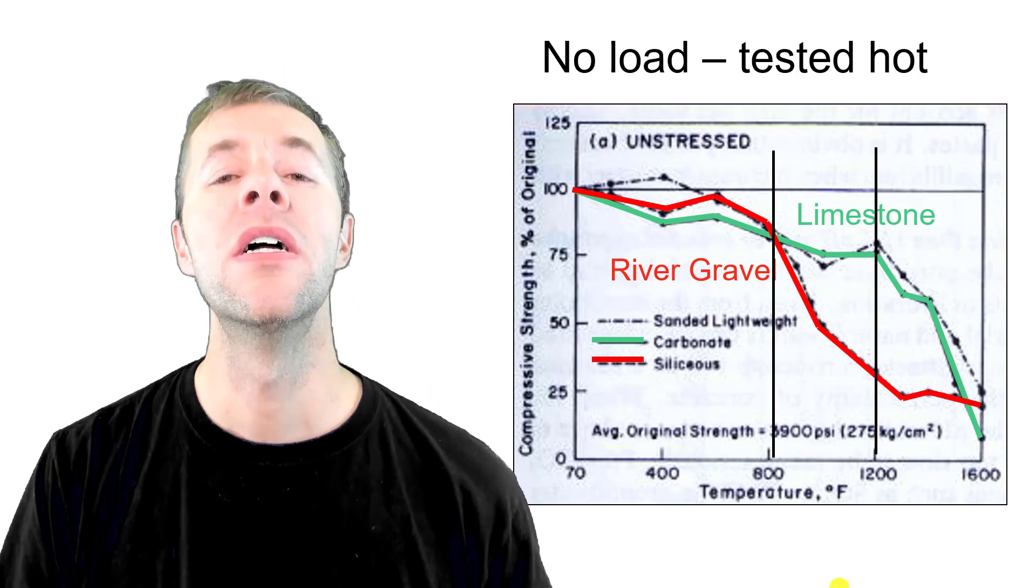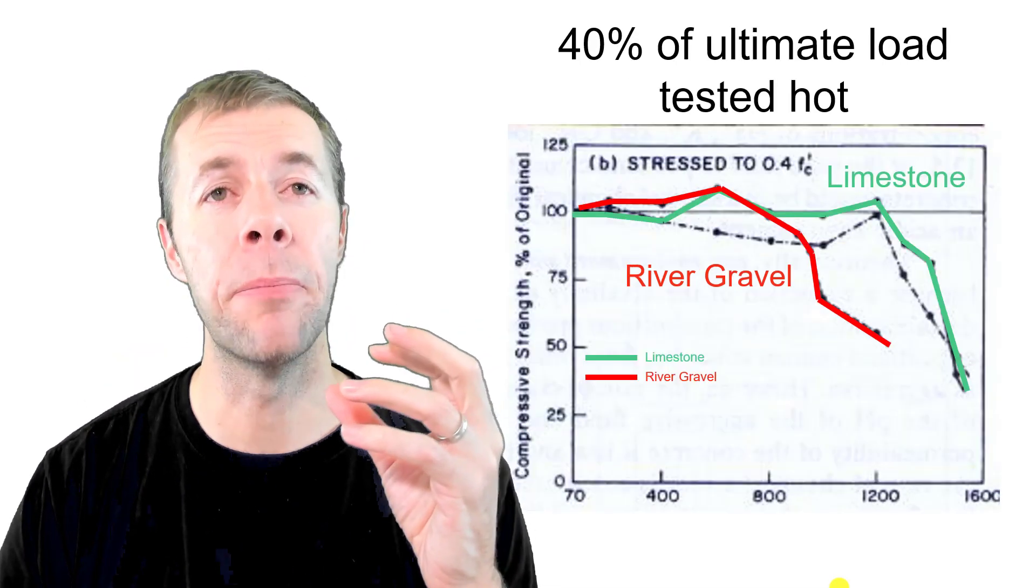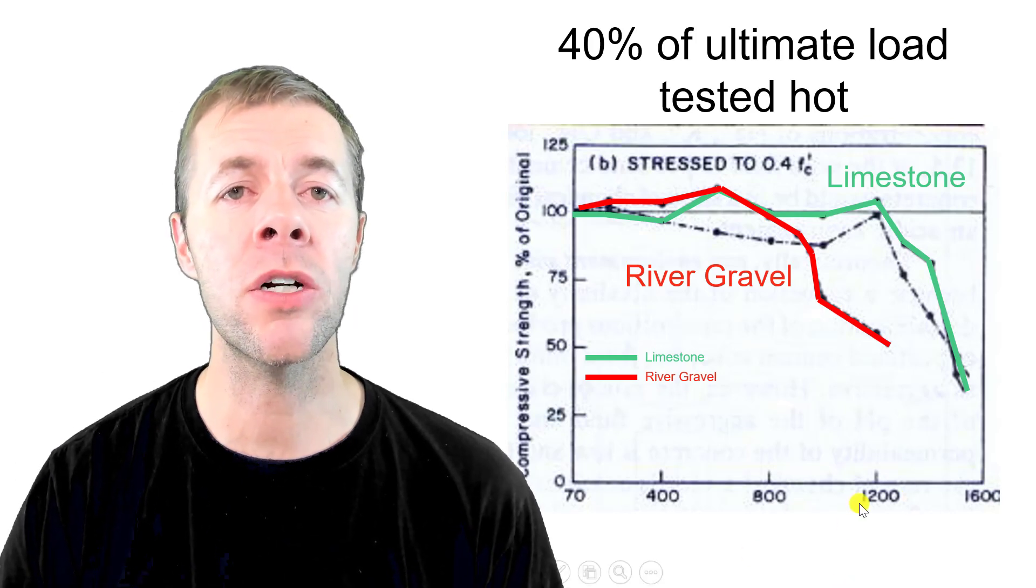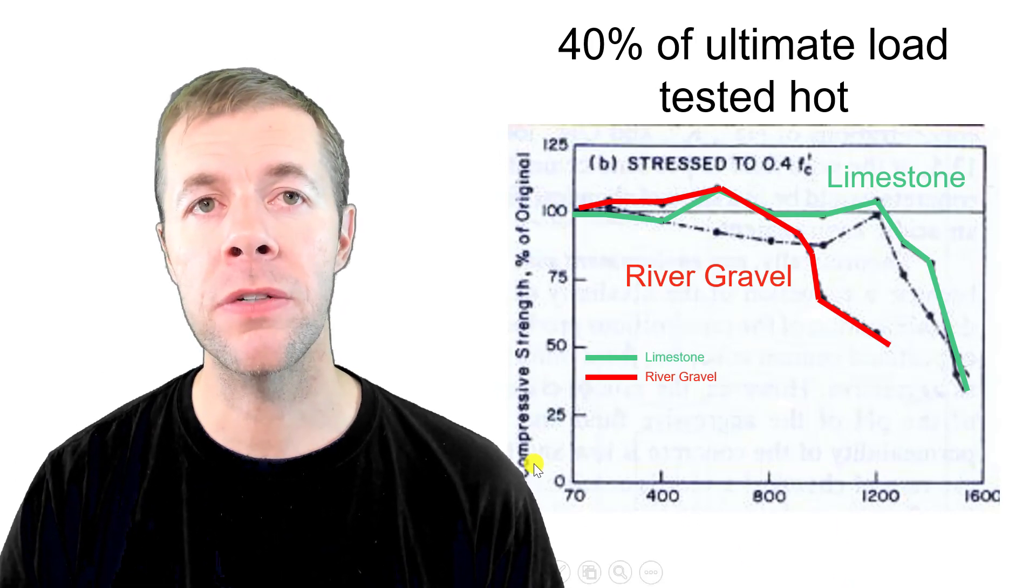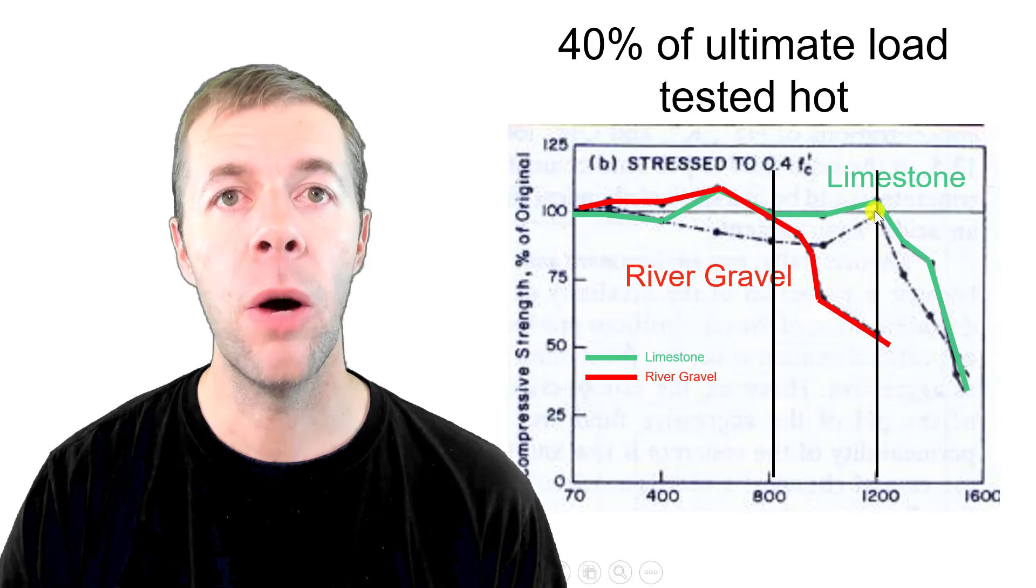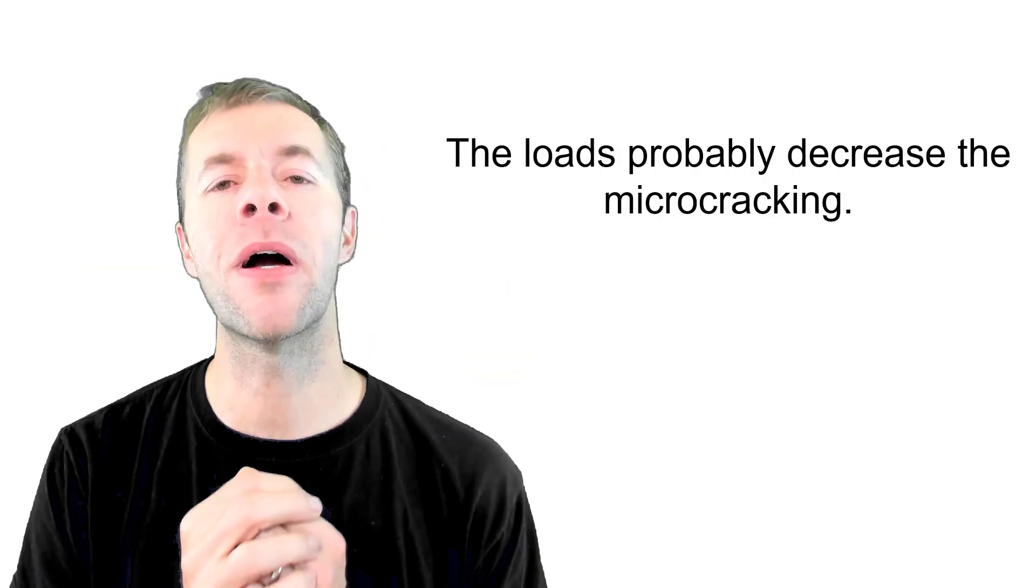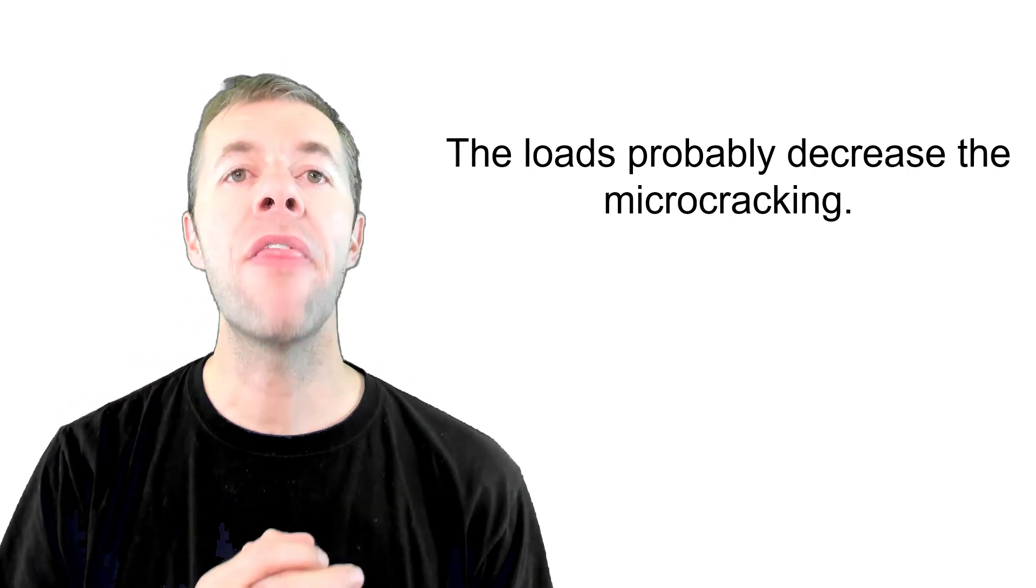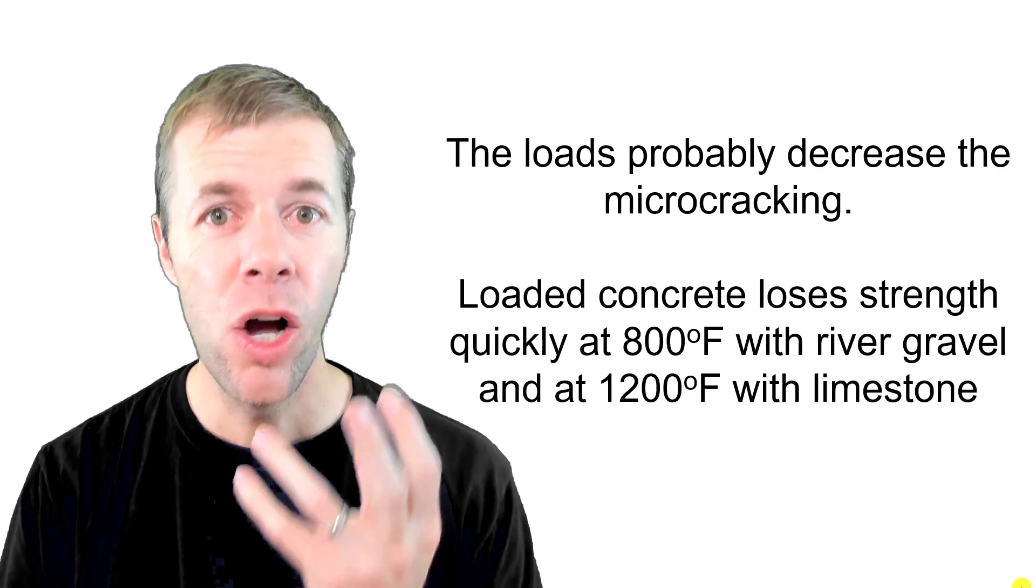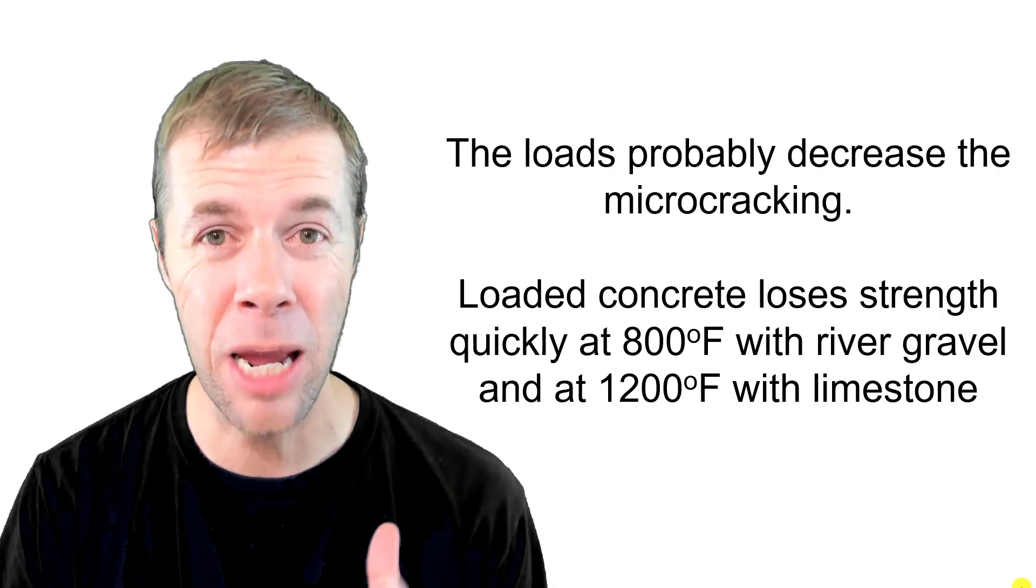Now this is the data I showed you before. This is a sample that was not loaded previously and they were tested while they were hot. Now let's say I loaded a sample. I'm going to load it up to 40% of its ultimate load. But again I'm going to test it while it's hot. I still got temperature down here on the x-axis and I've got this compressive strength drop. This percentage compressive strength loss. And again we see right when you hit 800 degrees Fahrenheit the river gravel drops heavily. When you hit 1200 the limestone drops heavily. So this load what does it do? Well it probably decreases the micro cracking. It probably keeps those cracks smaller. And the loaded concrete loses strength again quickly at 800 degrees Fahrenheit for the river gravel or 1200 for the limestone. That's likely when the aggregates just start deteriorating. And it doesn't matter if it's preloaded or not. Once you start to deteriorate your aggregates it's kind of game over for that concrete system.